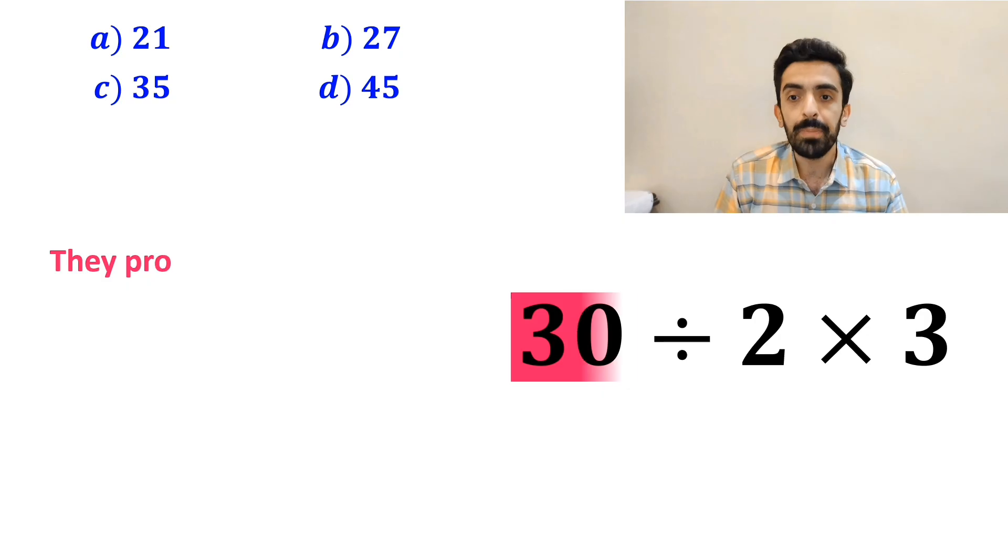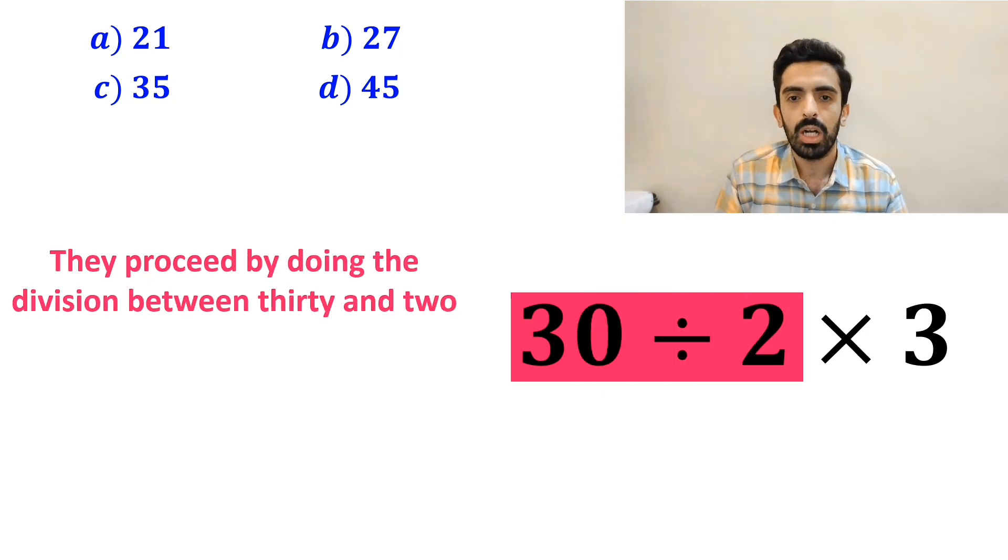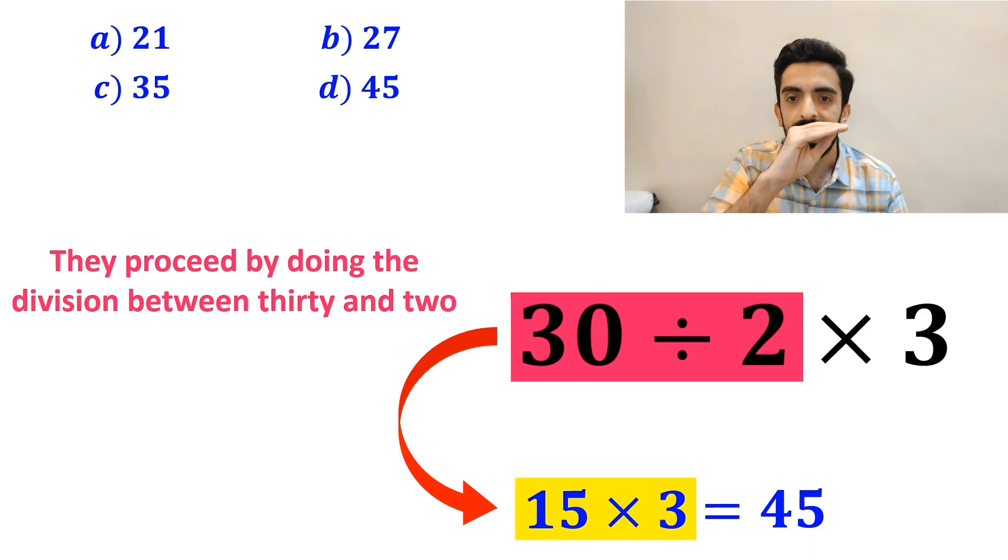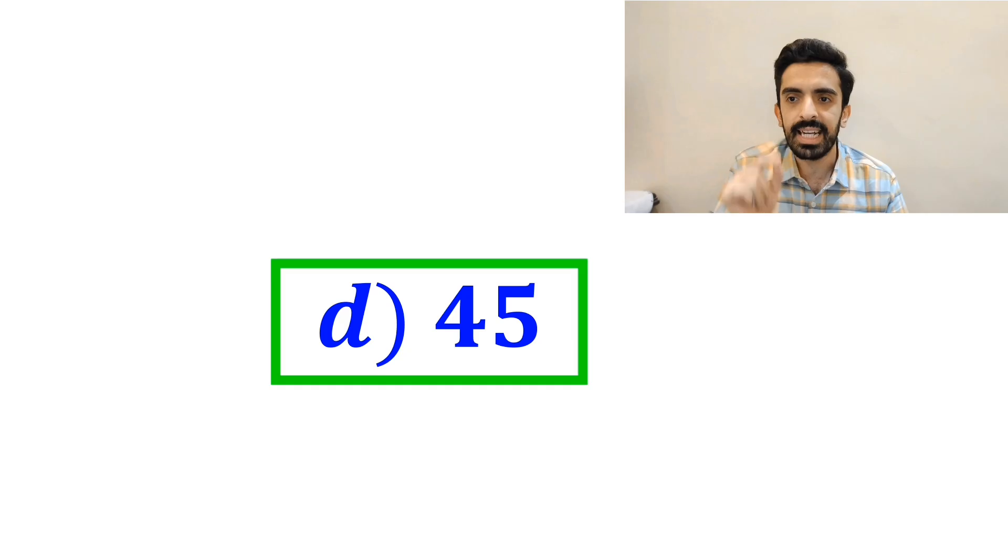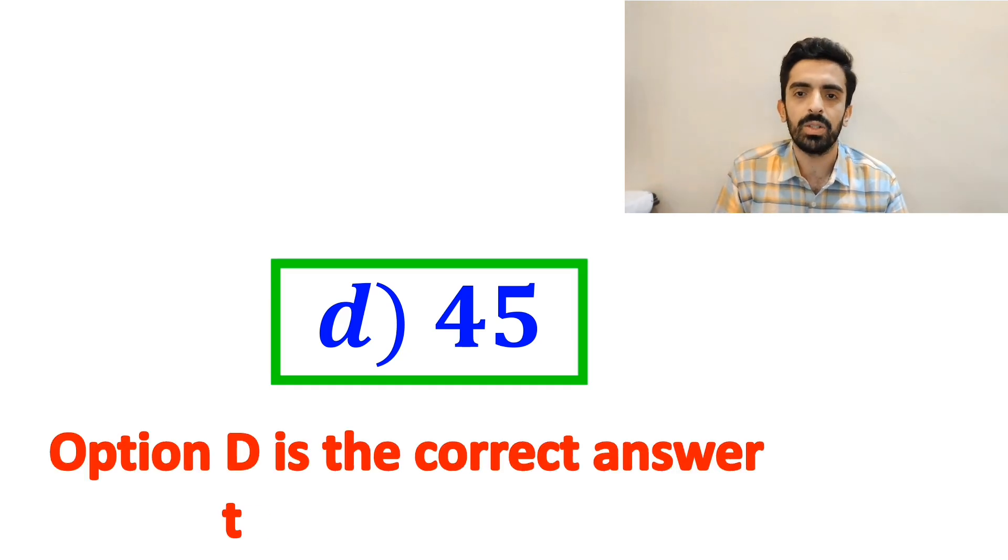Then they proceed by doing the division between 30 and 2, which gives them 15 times 3. And finally, they multiply 15 by 3, which ends up with the answer 45. Then, without any hesitation, they quickly say that option D is the correct answer to this question.